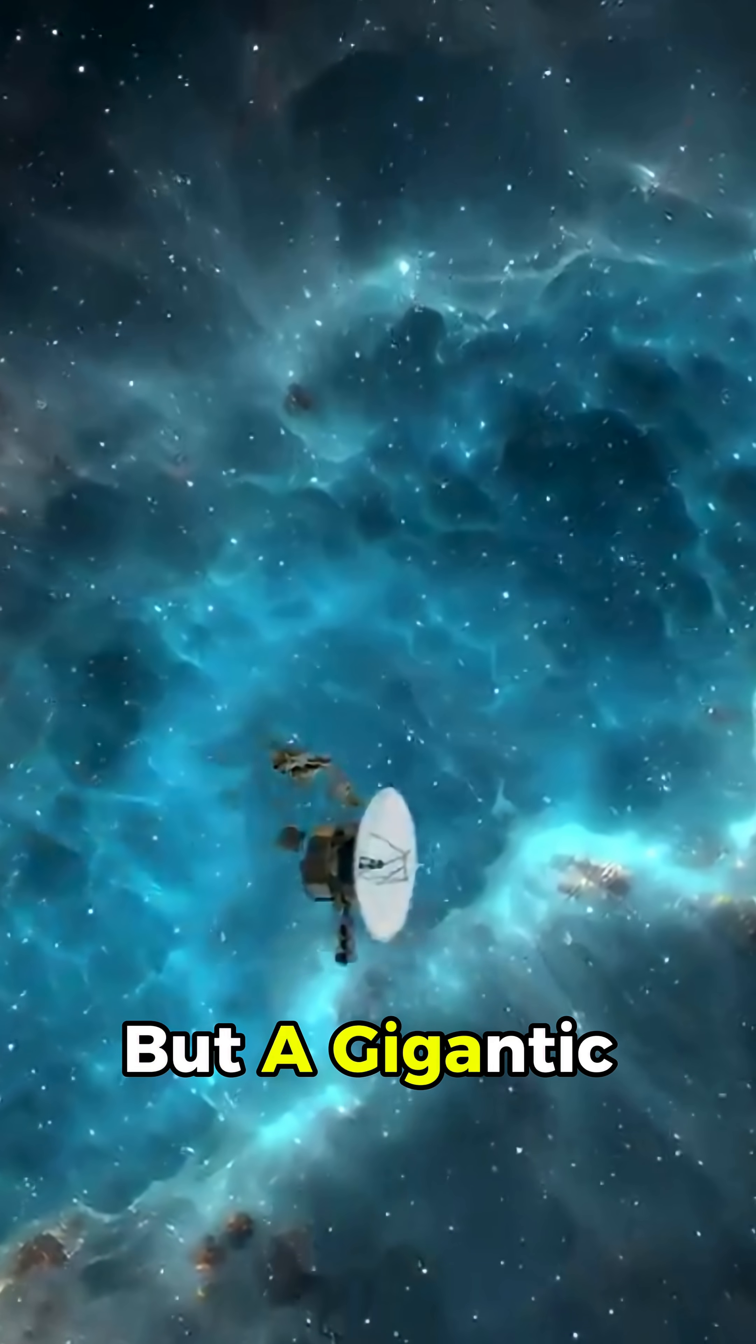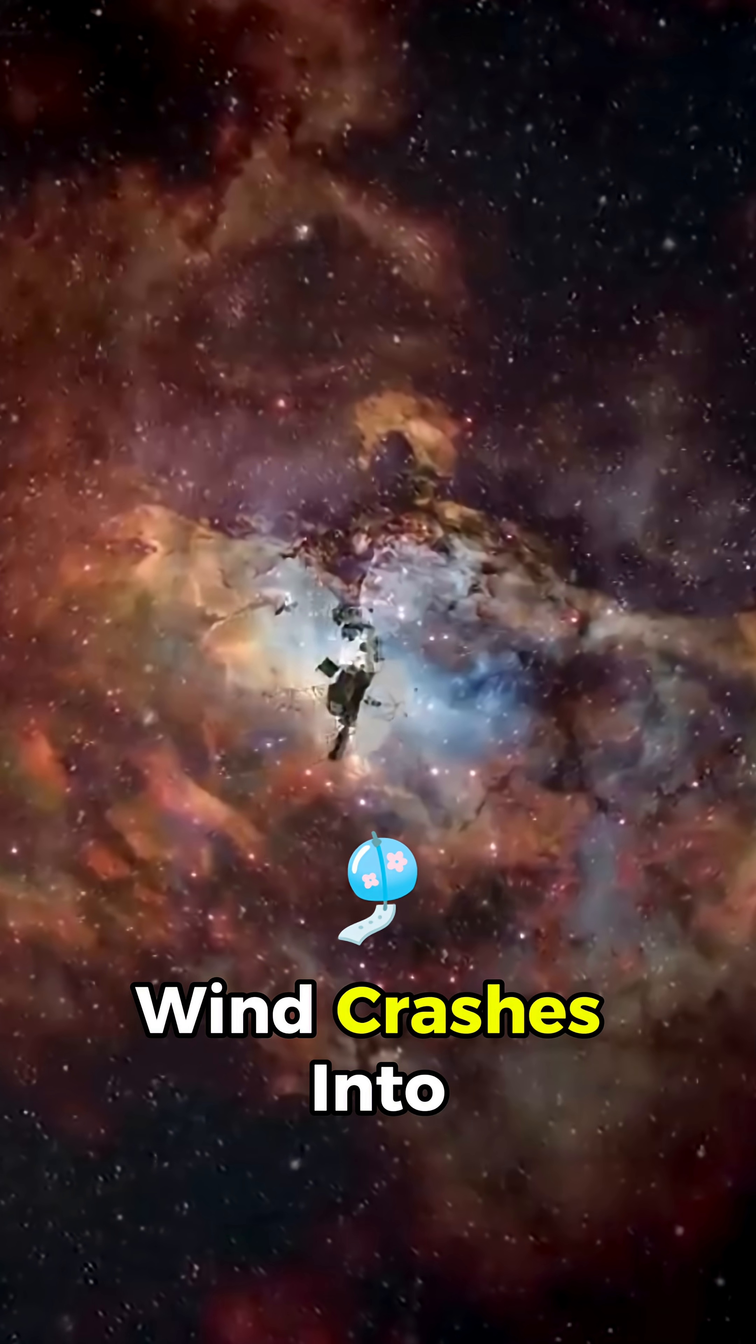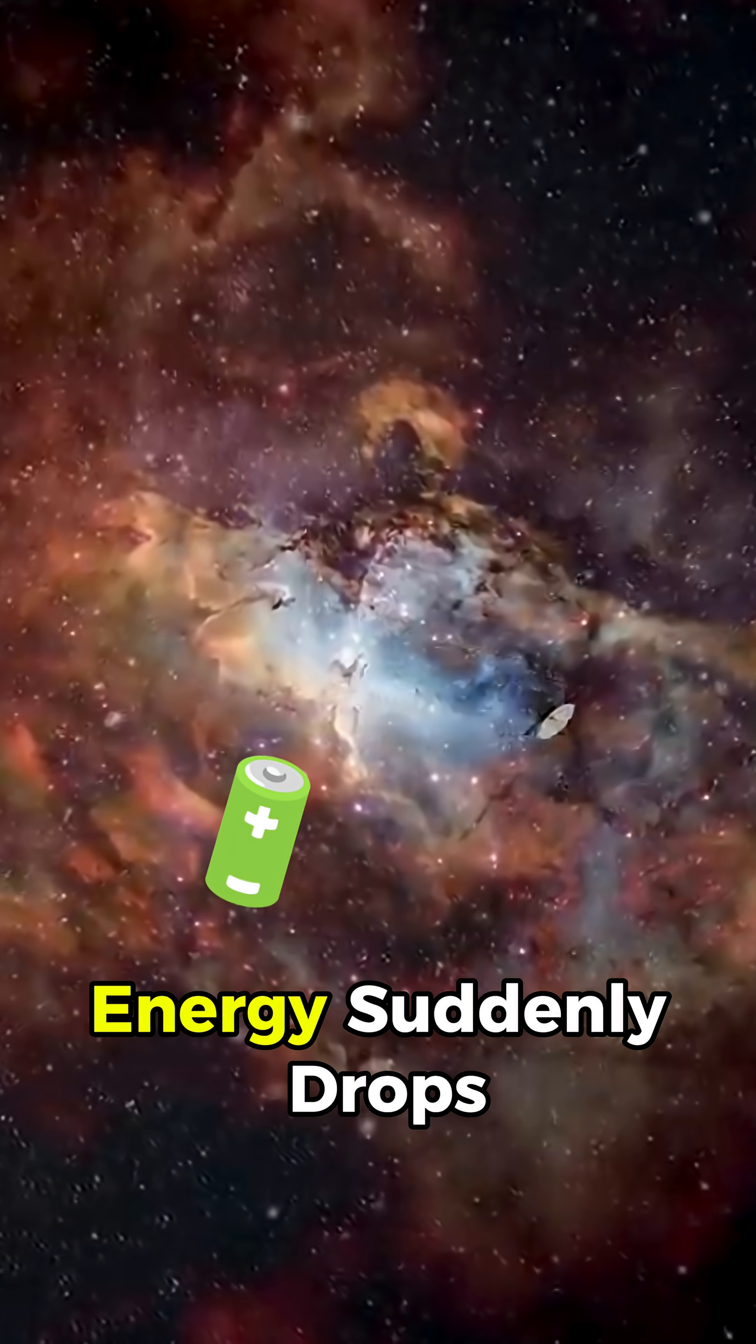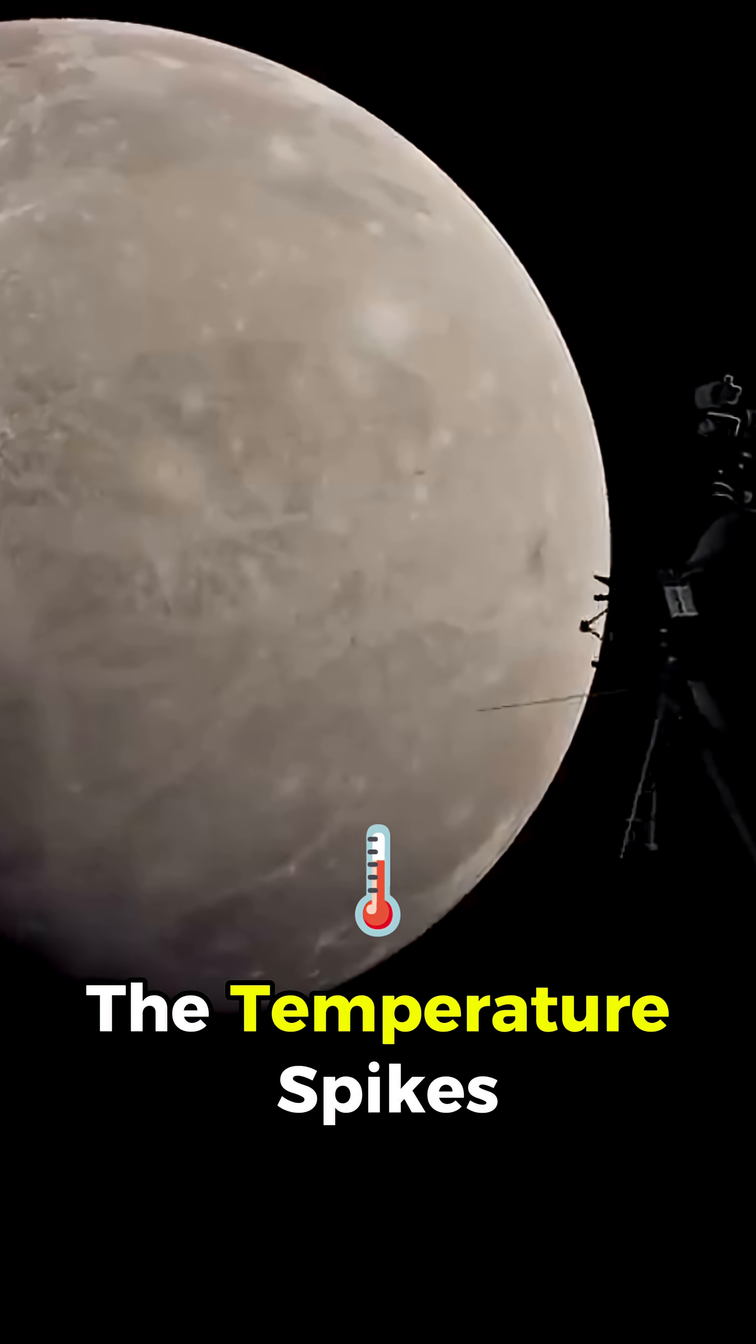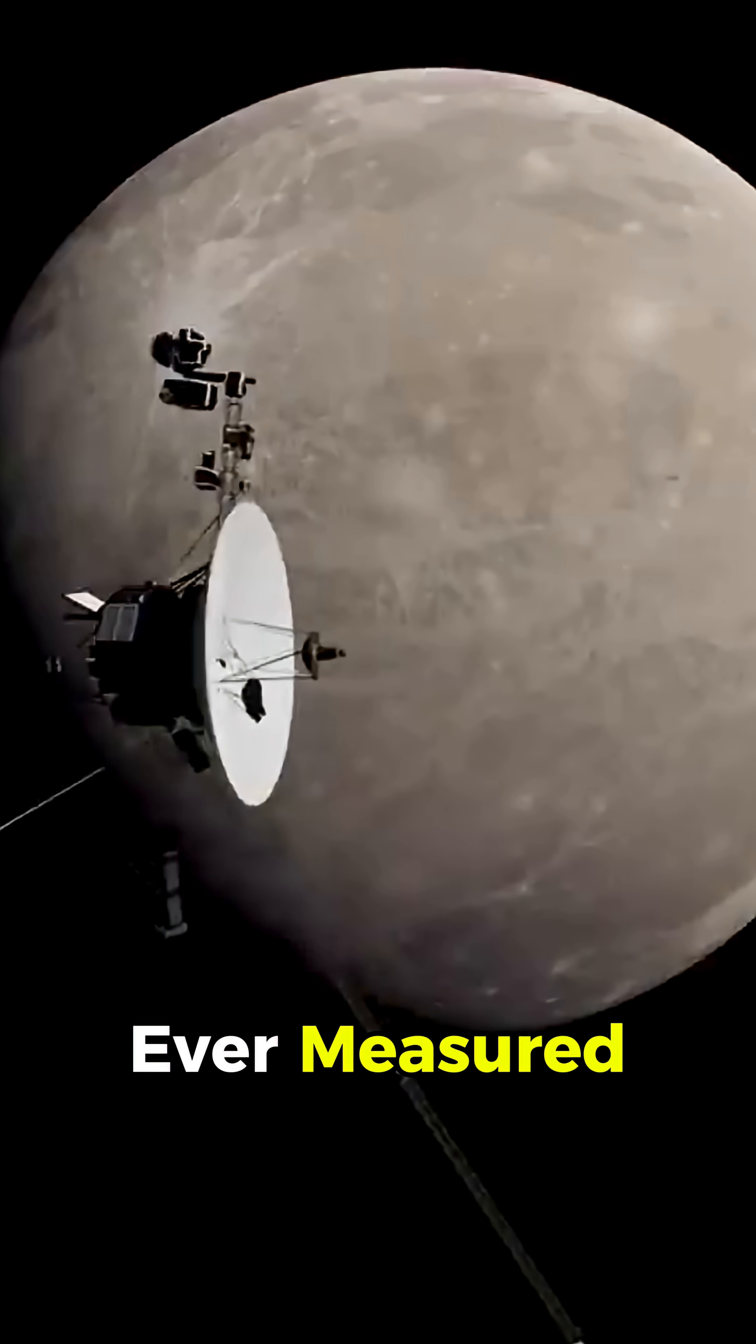Not a solid wall, but a gigantic shield of charged particles where the solar wind crashes into interstellar space. Here, the sun's energy suddenly drops, the temperature spikes, and radiation levels jump by more than 10 times what Voyager had ever measured.